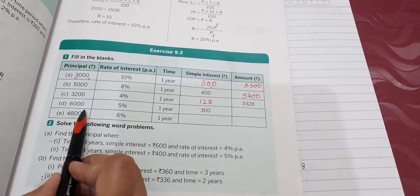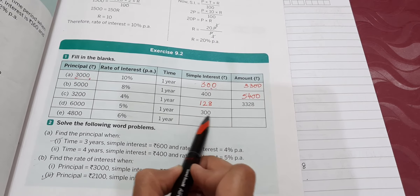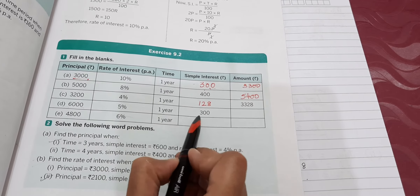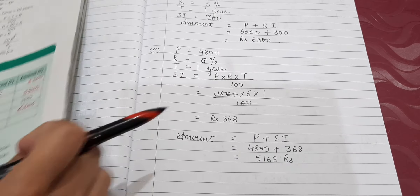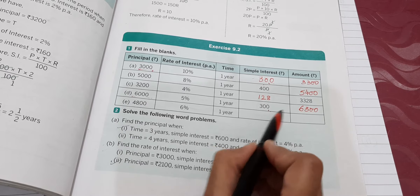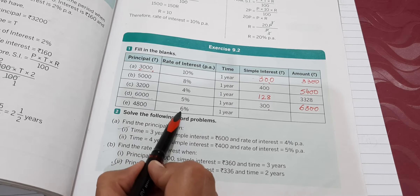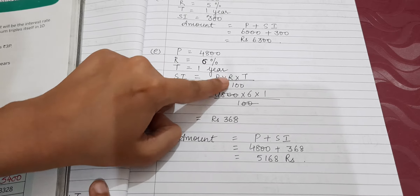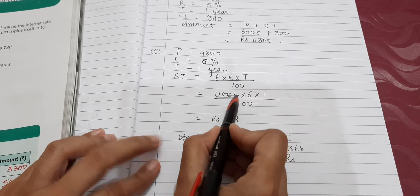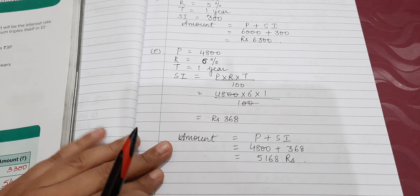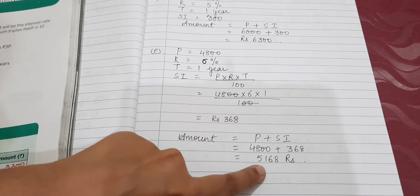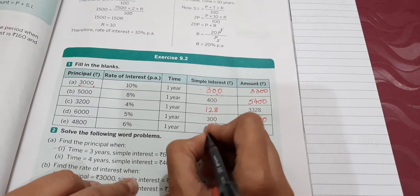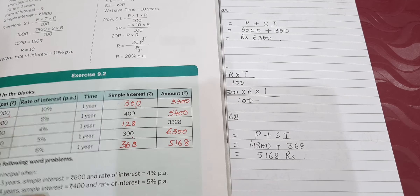Part (d): principal, rate, time, and simple interest are given; you just find the amount. Amount = Principal + Simple Interest = 6300. Part (e): principal is 4800, rate is 6%, time is 1 year. SI = 4800 × 6 × 1 / 100 = 288. Amount = 4800 + 288 = 5088.